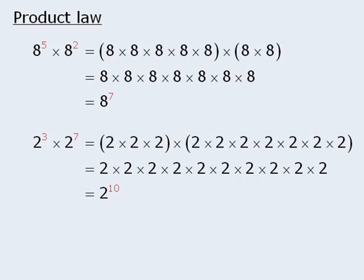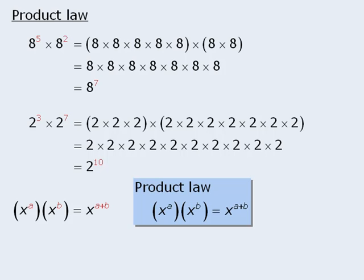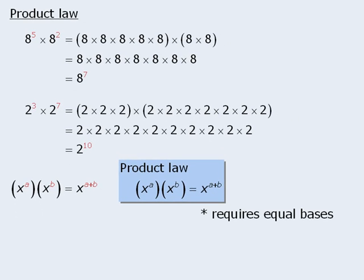We can generalize these results as follows. To find the product of x to the power of a and x to the power of b, we keep the base the same and simply add the exponents a plus b. Please note that if we want to apply the product law, the two bases must be the same.